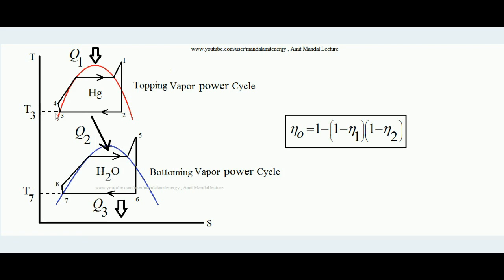Mercury loses heat between points 2 and 3, for example at 350°C. The bottoming vapor cycle uses water as the working fluid. Water enters the boiler at point 8 and comes out in superheated form at point 5, then expands in the turbine to point 6, and condenses between points 6 and 7. Since the boiler requires heat and mercury is losing heat at a higher temperature, that rejected heat is utilized to heat the water and convert it into superheated steam.